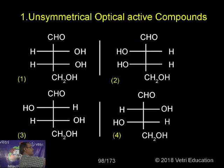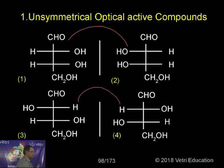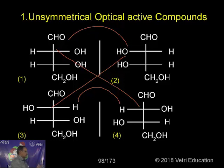To understand that, just look here. Compounds one and two are called enantiomers — mirror images. Compounds three and four are also called enantiomers. Now, compounds one and four are called diastereomers, and two and three are also called diastereomers.